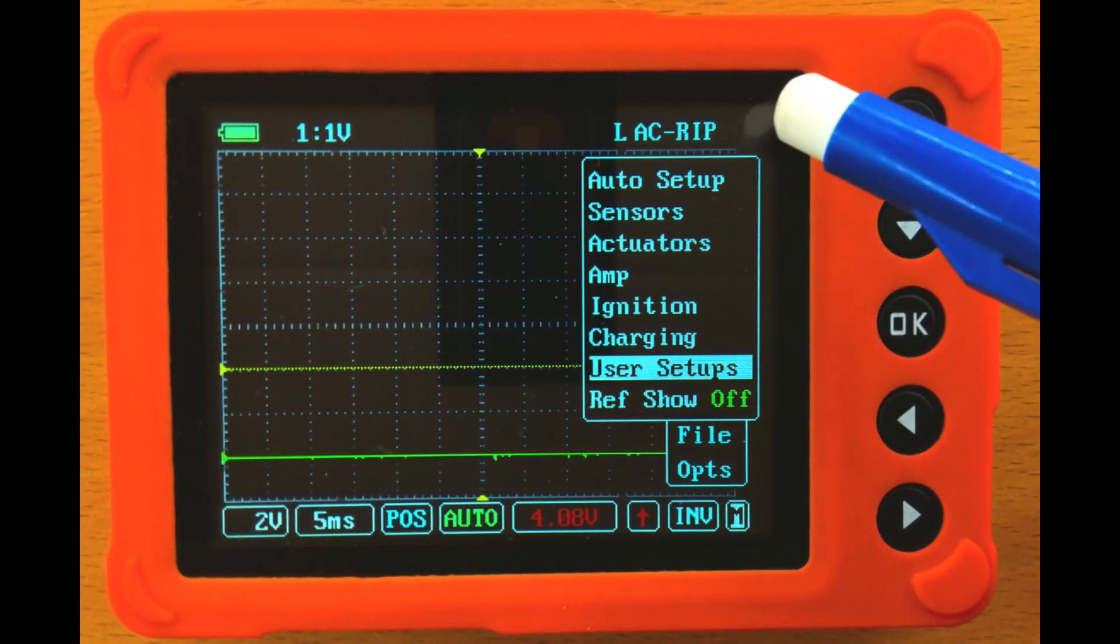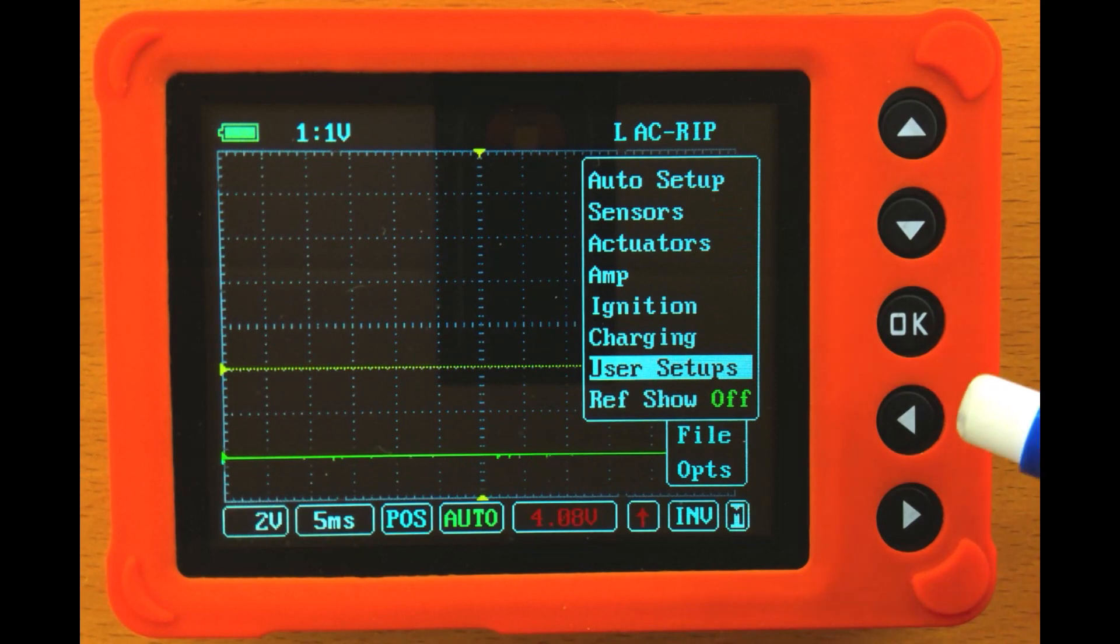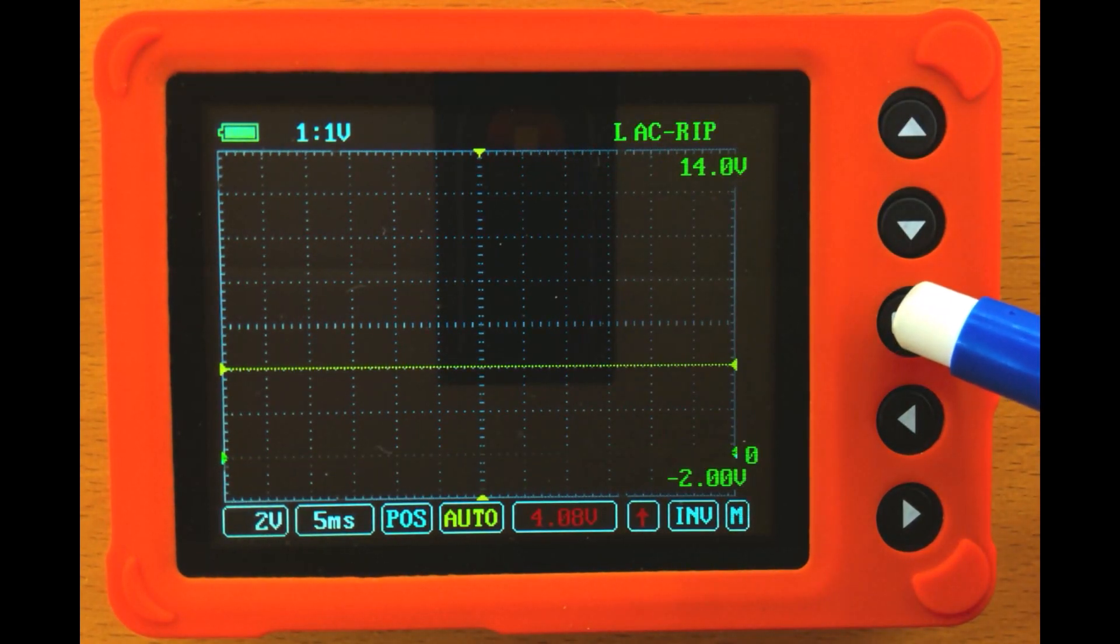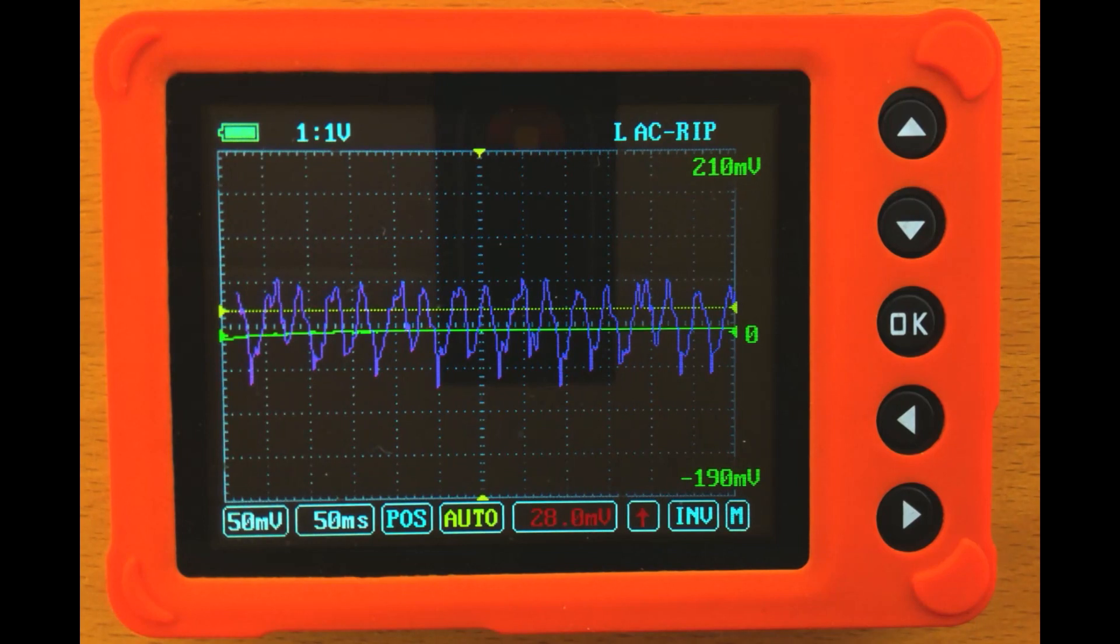Now the first thing that comes up is my AC Ripple. I do have other presets in here, and those are accessed through the left and right arrow buttons. Once I'm on the setup that I want, I press and hold the OK button until the name turns completely green.